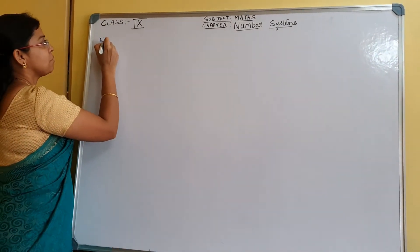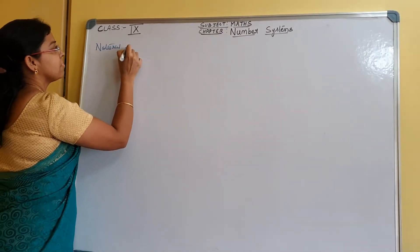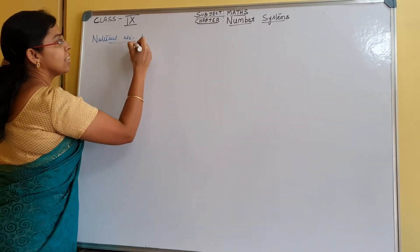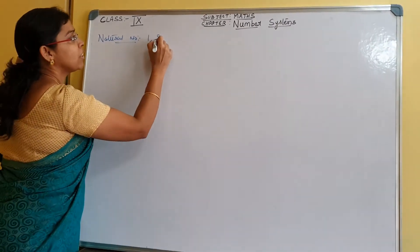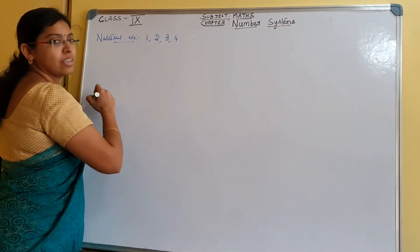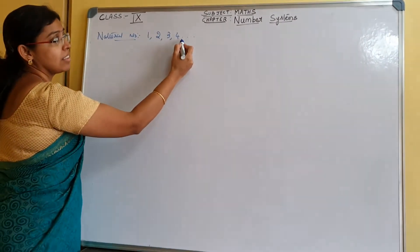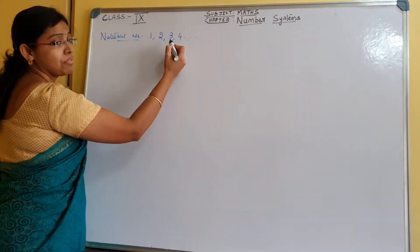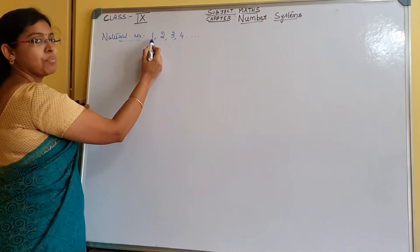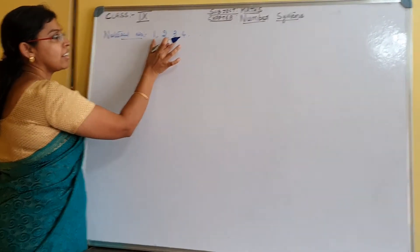First, natural numbers. When we say natural numbers, these are the numbers that we use for counting: 1, 2, 3, 4, and goes on. These dots refer to endless — they go endless. So it starts from 1; 1, 2, 3 — these are the set of numbers starting from 1.